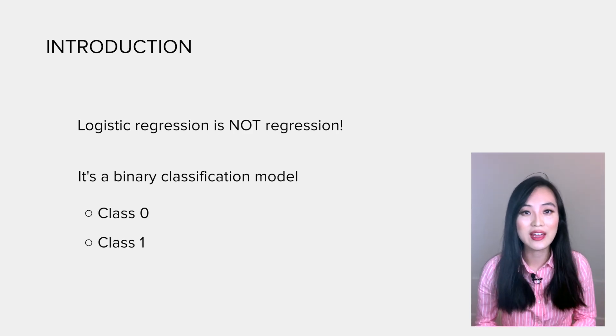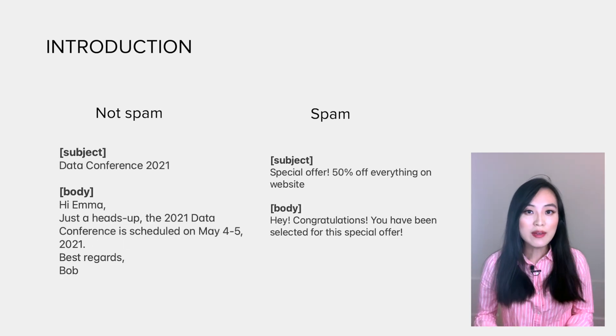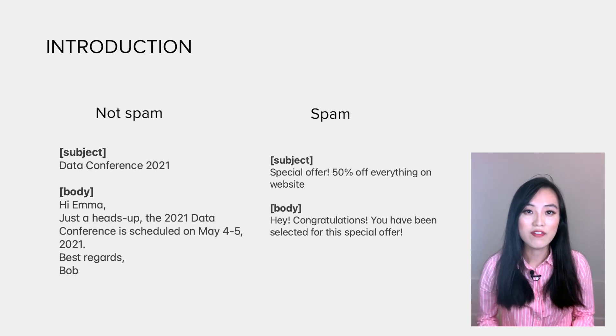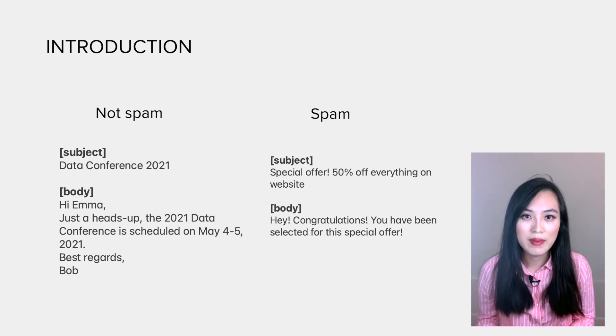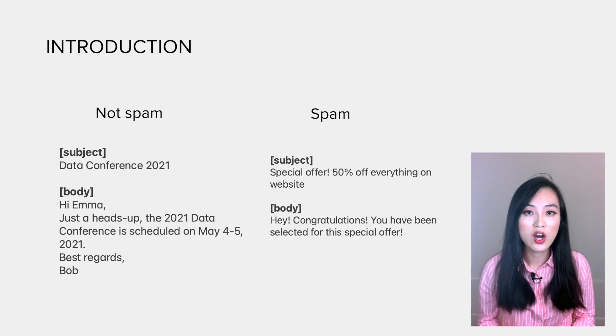There are two possible outcomes representing two different classes: class 0 and class 1. For example, we can use logistic regression to classify if an email is spam or not based on the subject and the body of that email.